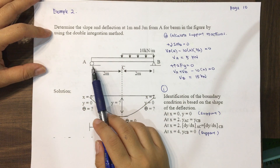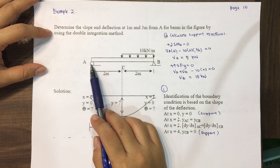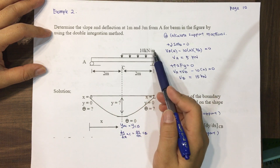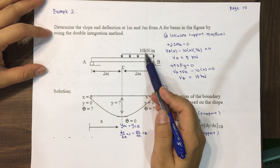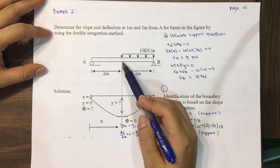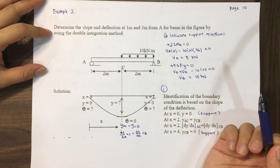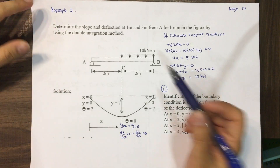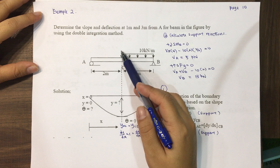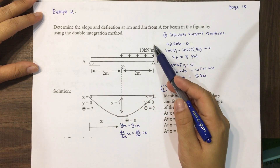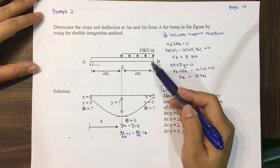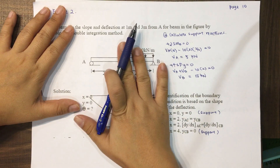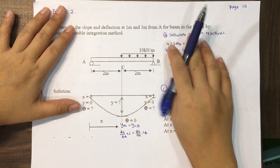We can see that this beam is simply supported with a roller and a pin support. A uniform distributed load of 10 kilonewtons per meter is applied from C to B. Using the double integration method, we need to cut twice — once at AC and once at CB, before the support.